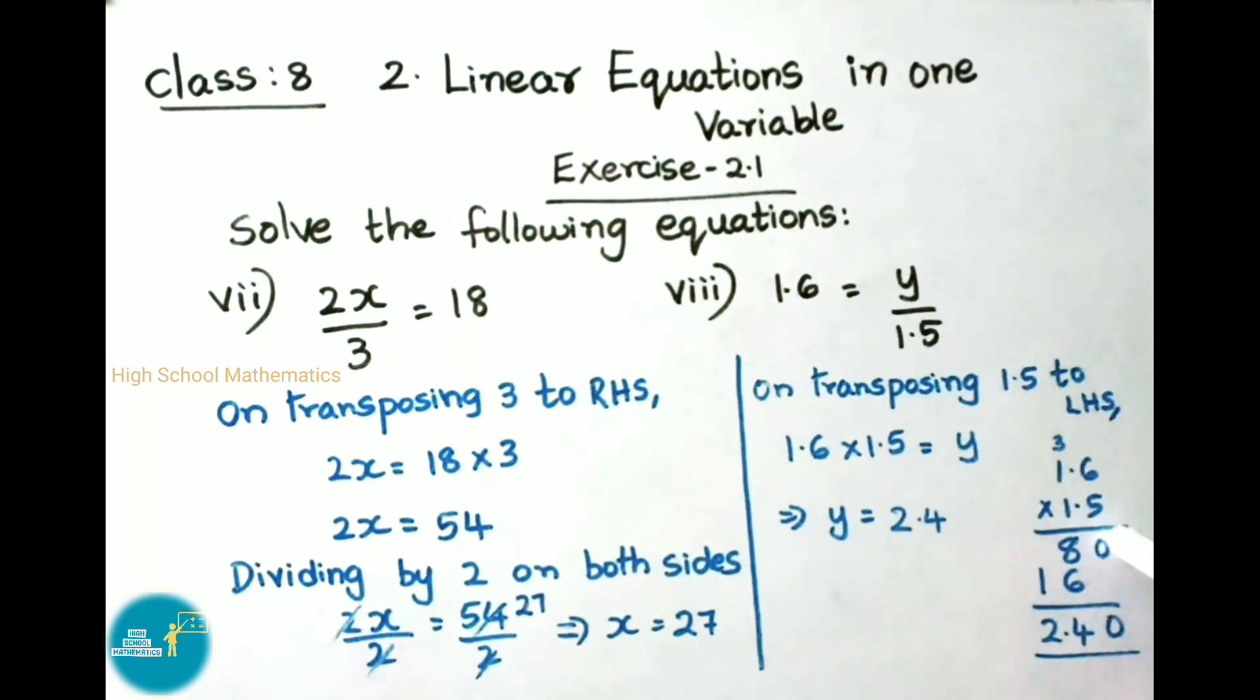5 × 6 = 30, so 0 carry 3. 5 × 1 = 5, plus 3 = 8. Next multiply by 1: 1 × 6 = 6, 1 × 1 = 1. Adding: 0, 8 + 6 = 14, so 4 carry 1. 1 + 1 = 2. Decimal after 1 digit here, decimal after 1 digit here, so 1 + 1 total 2 digits. Right side onwards, 2 digits before we place the decimal. The answer is 2.40, that is 2.4. Therefore y = 2.4.